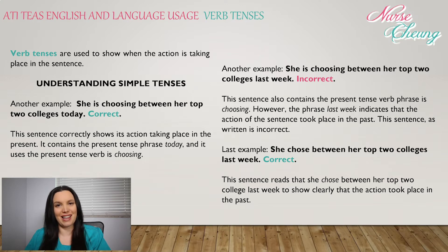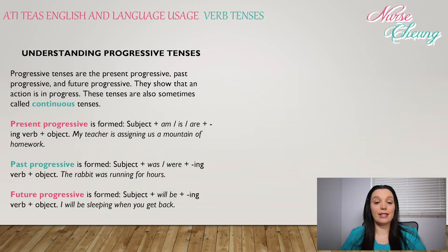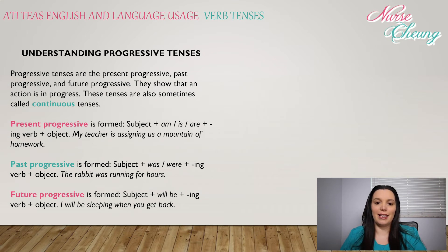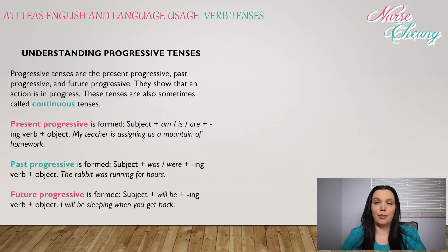Now let's look at progressive tenses: the present progressive, past progressive, and future progressive. They show that an action is in progress, and are also sometimes called continuous tenses. Present progressive is formed: subject + am/is/are + an -ing ending verb + object. For example: 'My teacher is assigning us a mountain of homework.' Past progressive is formed: subject + was/were + an -ing ending verb + object. For example: 'The rabbit was running for hours.'